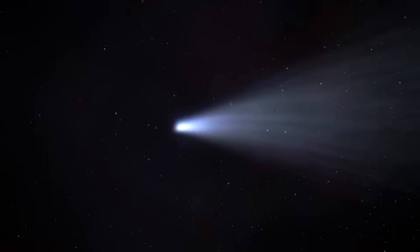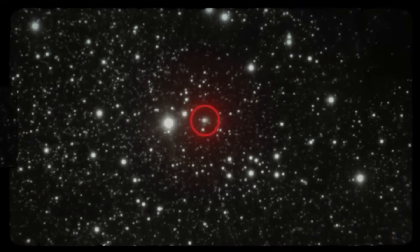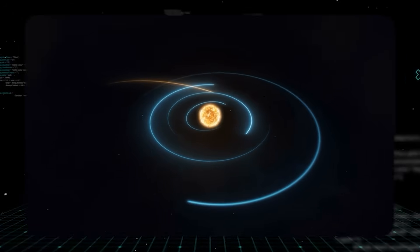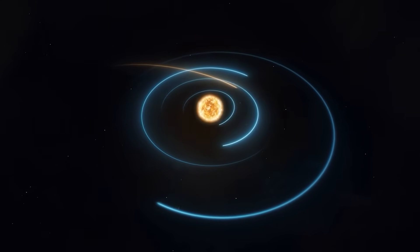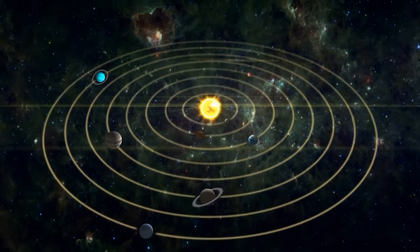But 3-Eye Atlas moved differently. It didn't barrel through space. It coasted. Its trajectory was eerily smooth, almost like it had been piloted. Its path allowed it to drift past several of our planets in ways that maximized gravitational efficiency, as though it had mapped our solar system long before arrival.